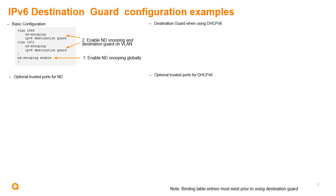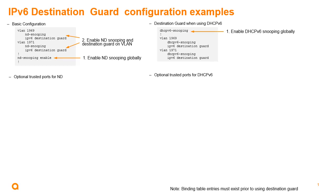Let's look at Destination Guard with DHCPv6. The first step is to enable DHCPv6 snooping globally. Then under the VLAN context, step two, you enable DHCPv6 snooping for that VLAN. And then add IPv6 Destination Guard to that context too.